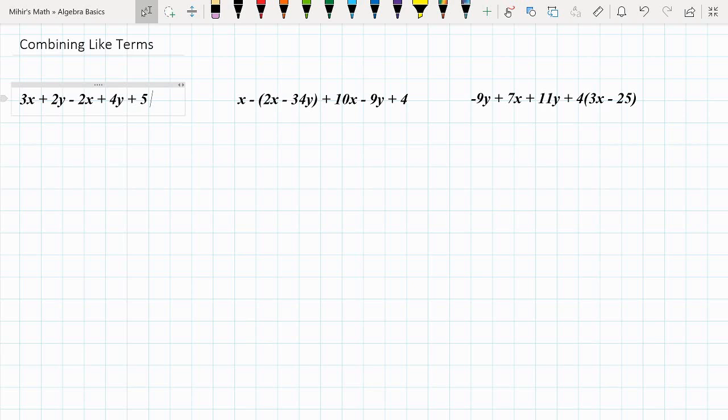Okay, so combining like terms is just when we add the coefficients of the like terms to simplify an expression. As we see here, we have an expression. So let's combine the like terms together this time.